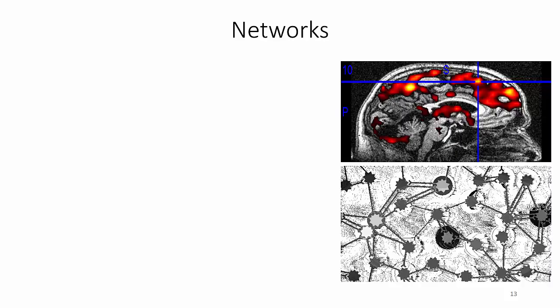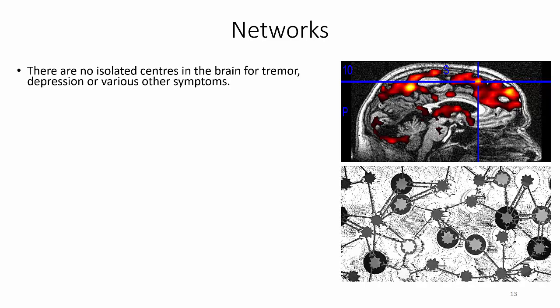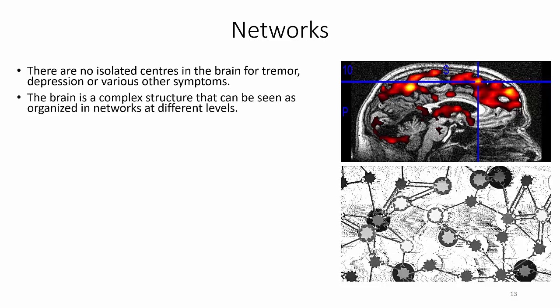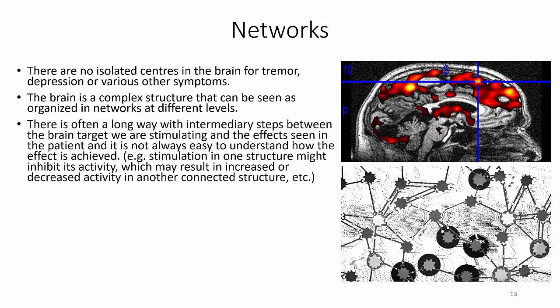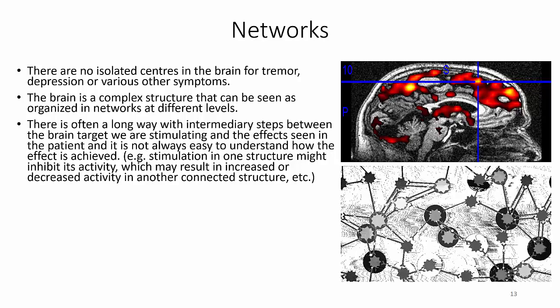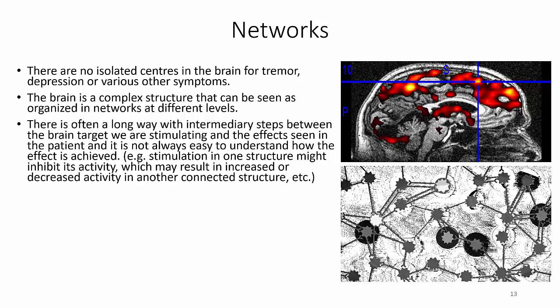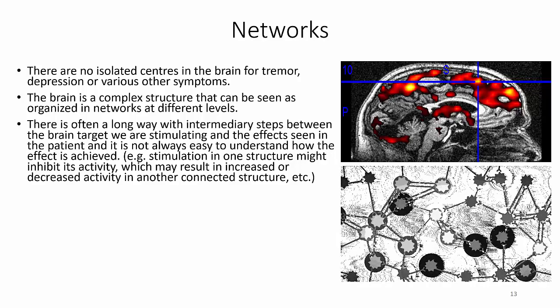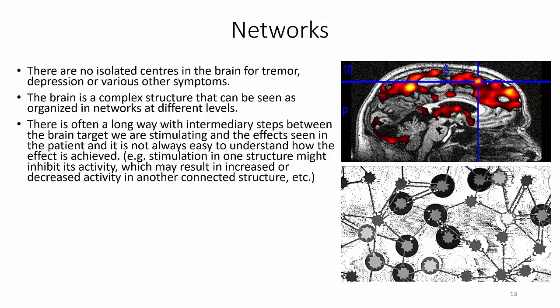The effects of stimulation will of course vary depending on which structure in the brain we are stimulating. It is important to remember that even if the actual field of stimulation is only encompassing an area of a few millimeters away from the electrode, there are no isolated centers in the brain for tremor, depression, or various other symptoms. The brain is a complex structure that can be seen as organized in networks at different levels, and there is often a long way with intermediary steps between the brain target we are stimulating and the effects seen in the patient.